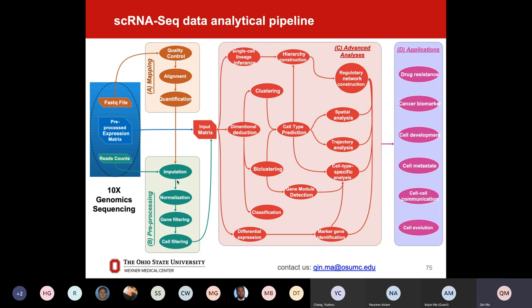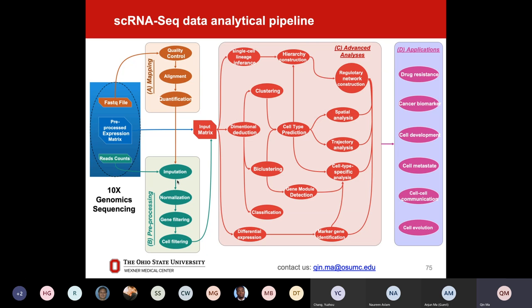We do normalization and gene filtration. If a gene is expressed in less than 5% of all cells, that gene may not have a big contribution to any analysis — we will filter those genes out. Cell filtration is similar: if in a cell the majority — like 99% — of genes have no information, that cell will be filtered out. These are all pre-analysis steps that have to be carried out before any other downstream analysis.